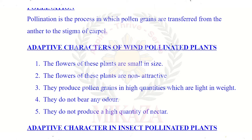For wind pollination, the flowers are small and not showy — insects are not attracted to them. The pollen grains are very small and very light in weight. These plants do not produce nectar and have no scent.